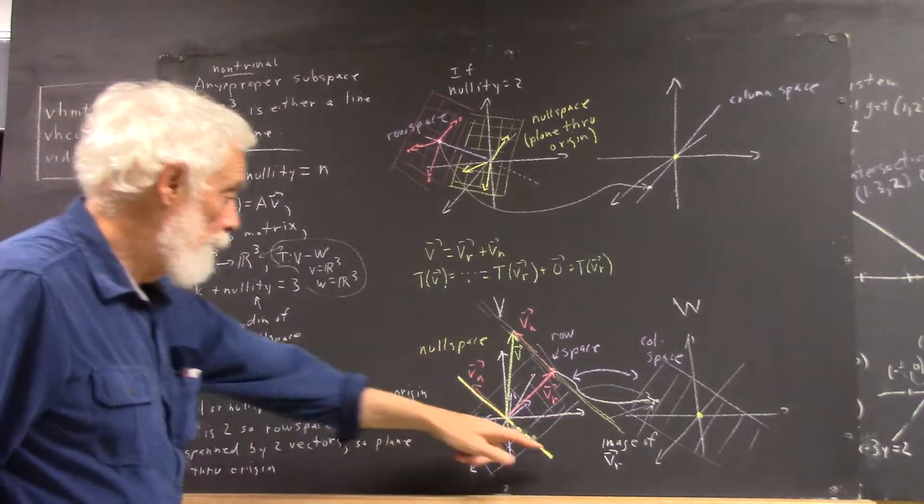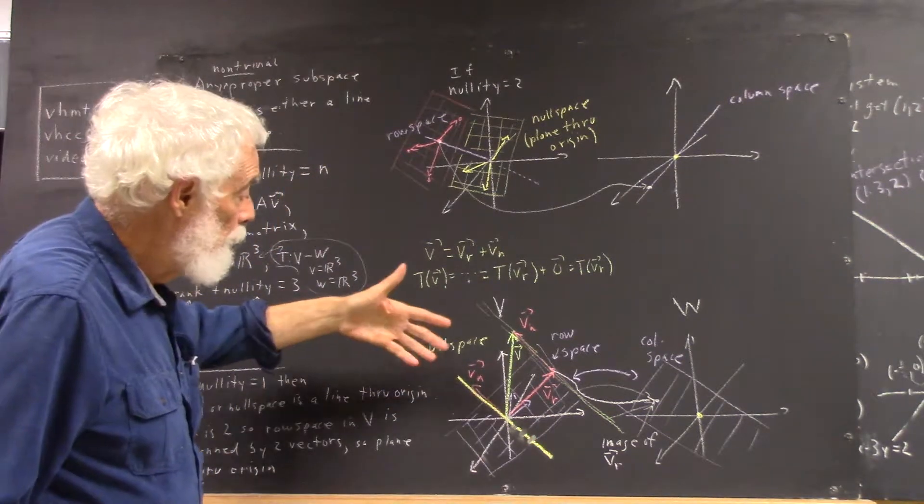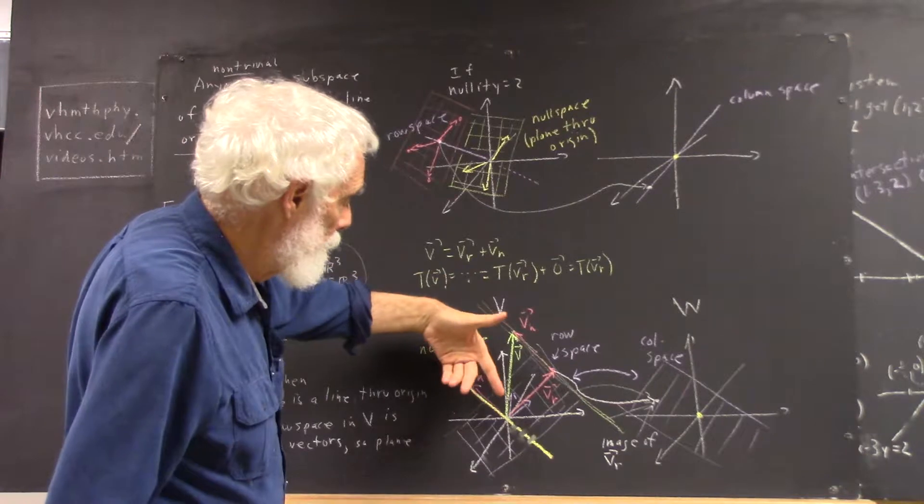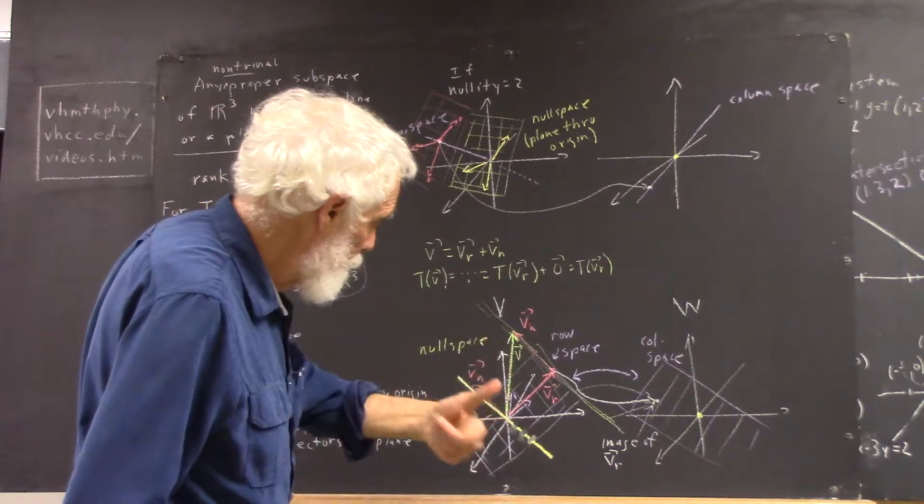If it's a line through the origin, and I've kind of depicted a line through the origin here, it could be at any angle. If your space is here, here, and out of the board,